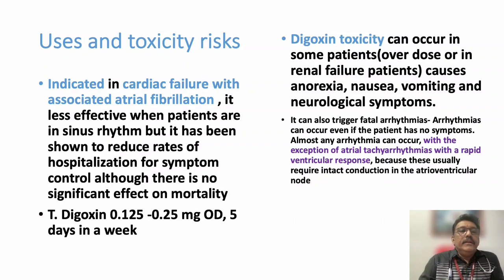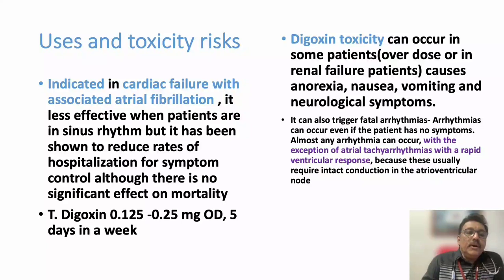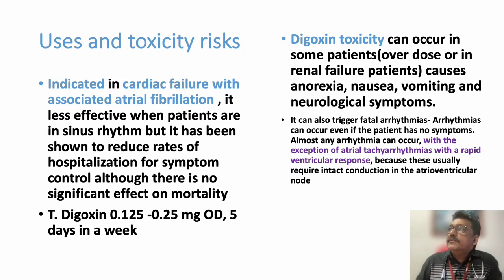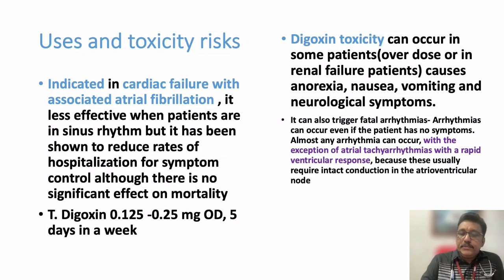Previously Digoxin was used in various cardiac failures, but nowadays its use is restricted to cardiac failure with atrial fibrillation — only because of the adverse effects it can produce. The dose is 0.125 to 0.25 milligram once daily, five days a week. In renal failure the dose must be reduced and adjusted according to creatinine clearance. After five days, a two-day drug holiday is given so that receptors return to normal.